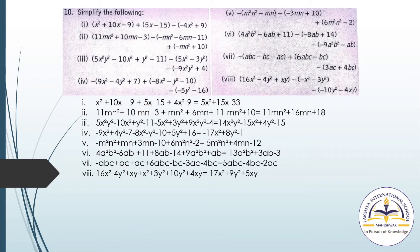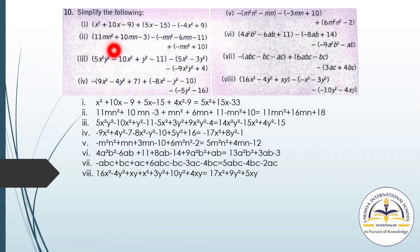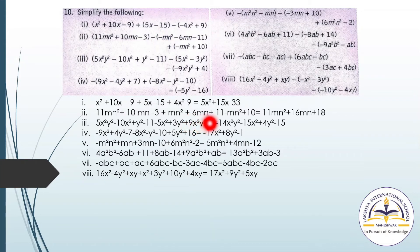Continuing simplification: for the constant terms, minus 9, minus 15, and minus 9: minus 9 plus minus 9 is minus 18, then minus 18 minus 15 is minus 33. For the second question: 11mn², plus 10mn, minus 3 stays as is. Then multiply the next bracket by minus: minus times minus gives plus mn², plus 6mn, plus 11. Then minus mn² plus 10. Collect all like terms to get the final answer.